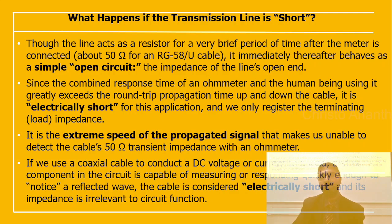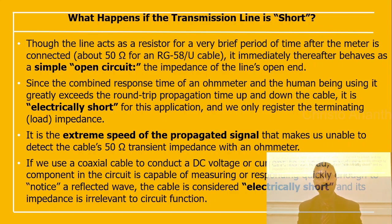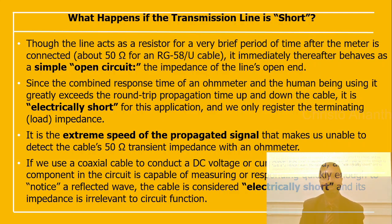Since the combined response time of the ohmmeter and human being greatly exceeds the round-trip propagation time along the cable, it is electrically short for this application — we register the load impedance. The extreme speed of the propagated signal makes us unable to detect the cable's 50 ohm transient impedance with the ohmmeter. If a coaxial cable conducts a DC voltage or current to a load and no component can respond quickly enough to notice a reflected wave, the cable is electrically short and its impedance is irrelevant.